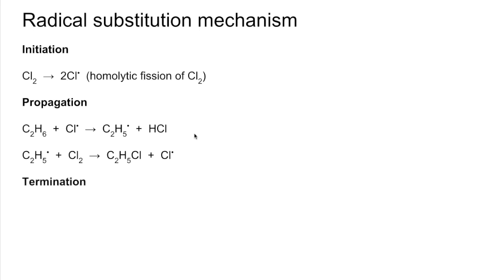The final step is called termination. That's where two radicals can combine and form a non-radical substance. There are a few options here. Two chlorine radicals could combine and form chlorine. A chlorine radical and an ethyl radical could form chloroethane. You could even get two ethyl radicals combining to form butane. You can see, again, not the best method if you're wanting to make a single substance.